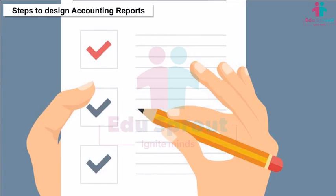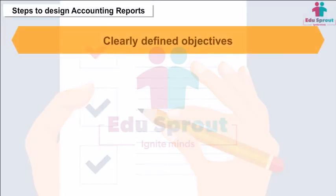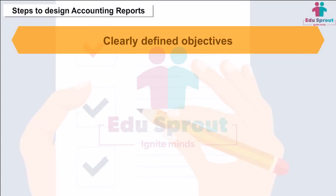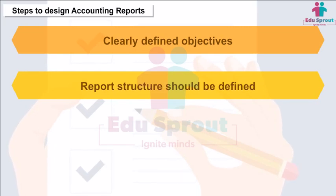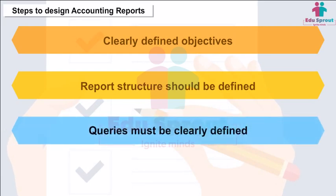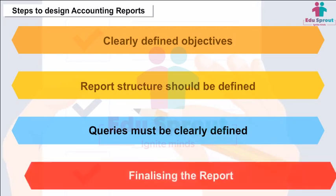Steps to Design Accounting Reports: The objective for which the report is being created must be clearly defined, including who will use the report and what decisions will be taken on its basis. The structure of the report is to be defined — what information the report will contain and what style of presentation will be used. The accounting queries must be clearly defined, including which methodology will be adopted while interacting with the database. Finally, the report is finalized.